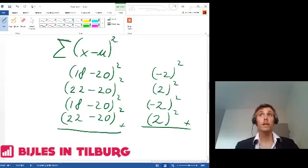So if you add all those, minus 2 or 2 squared will always be positive, so it will be 4. This one will be 4, this will be 4, this will be 4. So in total, 4 times 4 equals 16.